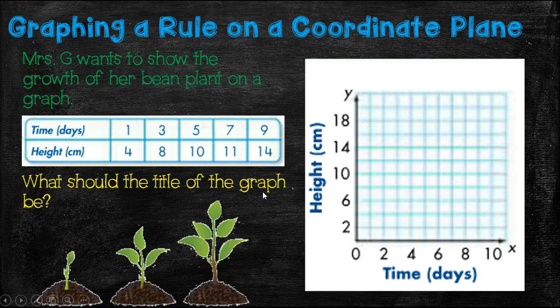Okay, so what should be the title of this graph? It could be Mrs. G's bean plant growth. But let's just make it nice and easy and call it plant growth. Remember, these are the important parts of your coordinate plane. You have to have an x-axis that's labeled, a y-axis that's labeled, and you also have to have a title.